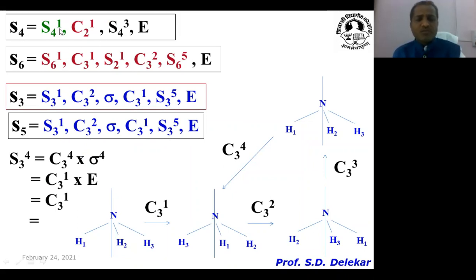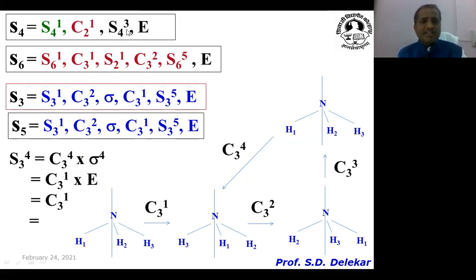Simplifying: S4¹ remains as it is. S4² simplifies to C2¹. We can write S4² as C4² × σ², and since σ² equals E and C4² equals C2¹, we get C2¹ × E = C2¹. S4³ has no collinear element. S4⁴ equals E. So S4 generates the subelements: E, S4¹, C2¹, and S4³.